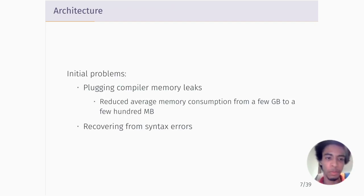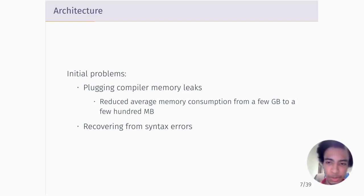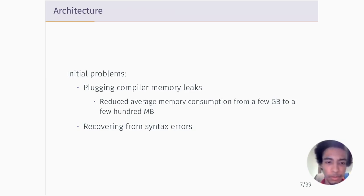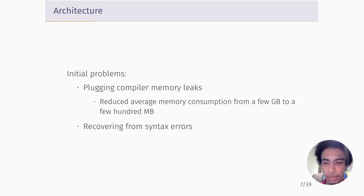Initially we had some problems with the compiler itself. One of the big problems affecting usability was memory leaks. The compiler was not designed to be part of a long running process like a language server, so there were a lot of memory leaks. We plugged all of them, and by doing that we reduced memory consumption of the language server from a few gigabytes to a few hundred megabytes on average for most projects.